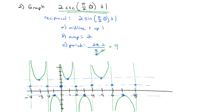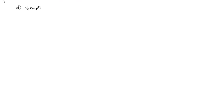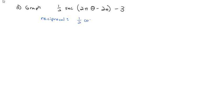We haven't done any secants yet, but the idea is exactly the same. Let's graph ½ secant(2πθ − 2π) − 3. Again, we'll first graph the reciprocal function — this is the reciprocal of ½ cosine — and then use that to guide the actual secant graph.